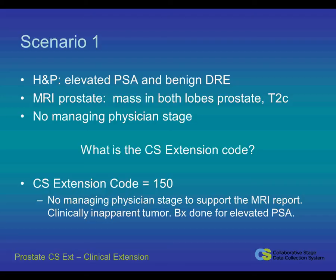In Scenario 1, we have a patient with an elevated PSA and a benign DRE. An MRI of the prostate is ordered. The radiologist reports a prostate mass in both lobes and notes the patient as T2C, but there is no documented managing physician imaging interpretation or stage. Since there is no managing physician stage or note to support the MRI report, the CS extension code should be 150 — tumor identified by needle biopsy for elevated PSA, clinically inapparent.